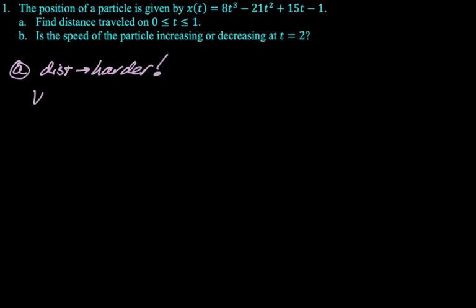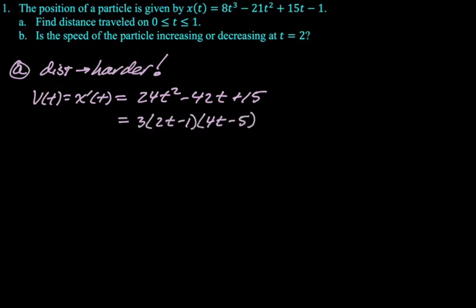So what we're going to do is find the velocity, and we're going to start by saying that v(t) is x'(t). You've got to make that connection. After you make that connection, you're good to go. So we just power rule our way through this. Did I use a calculator to factor this? Who could say? But anyway, it factors into 3 times the quantity (2t - 1) times the quantity (4t - 5).